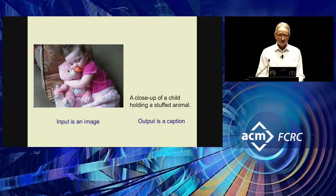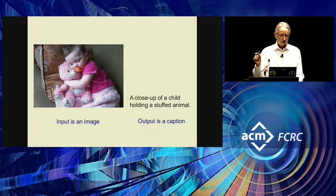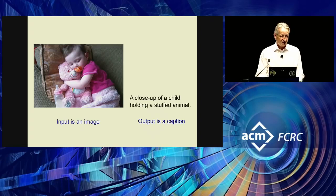An example of a kind of thing that people spent 50 years trying to do with symbolic AI is take an image and describe what's in the image — converting millions of pixels into a string of words. It's not obvious how you'd write that program. People tried for a long time and couldn't. People doing neural nets also tried for a long time, and in the end they managed to get a system that worked quite well, based on the pure learning approach.